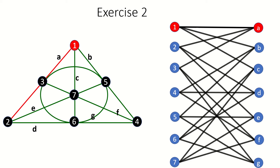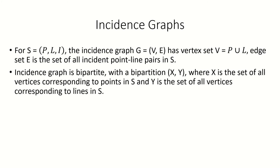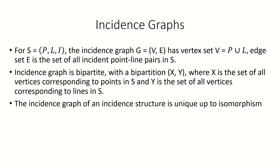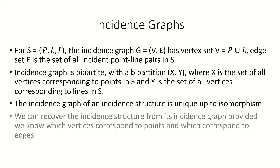Here's the result. Moving on, we can only generate one incidence graph, up to isomorphism, per incidence structure. And we can recover the entire incidence structure from the incidence graph, provided we know which set of vertices represents the points and which set of vertices represents the lines.